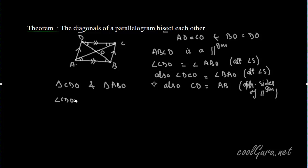Angle CDO equals angle ABO, which we have already proved. Similarly angle DCO equals angle BAO, which we have also proved. And side CD equals side AB.